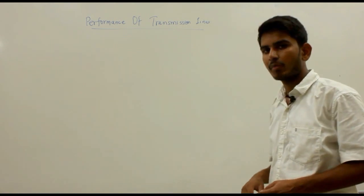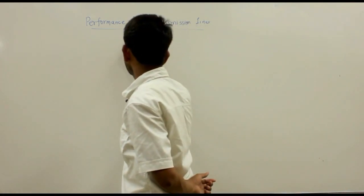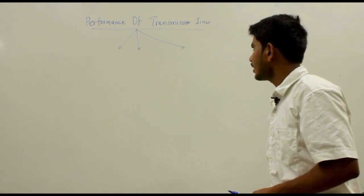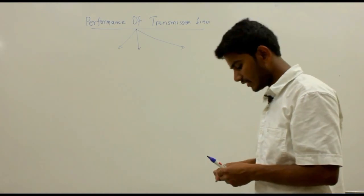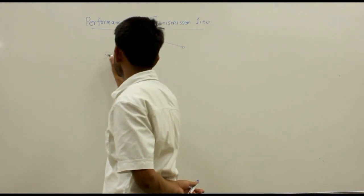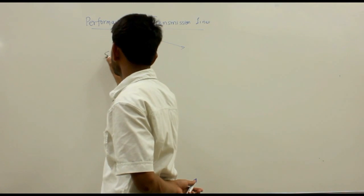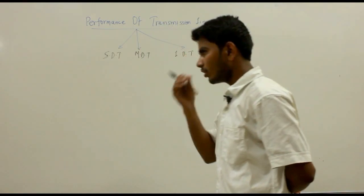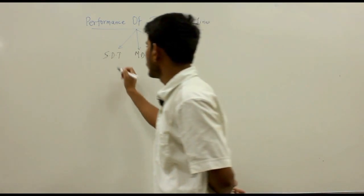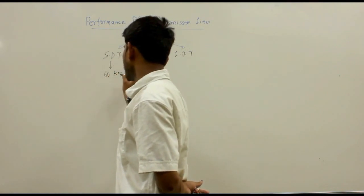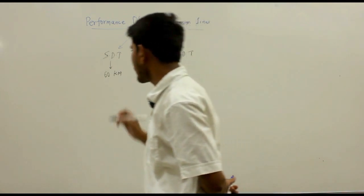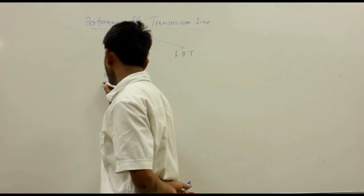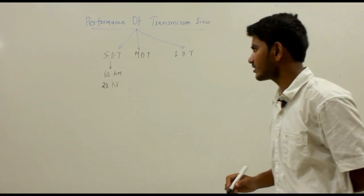The overhead transmission lines can be categorized into three types: short distance, medium distance, and long distance transmission lines. The short distance transmission line has a line length of up to 60 km and the voltage level is comparatively low, that is below 20 kV.